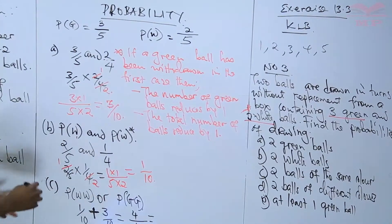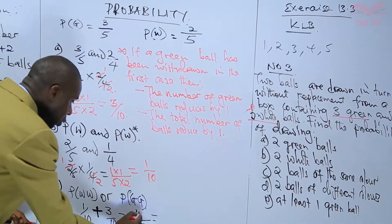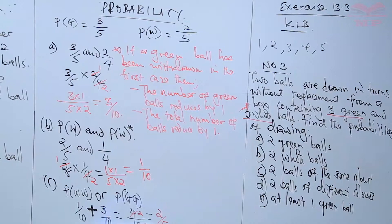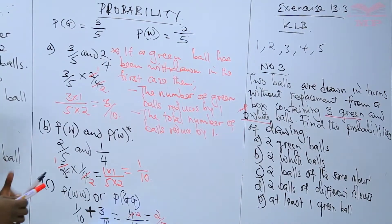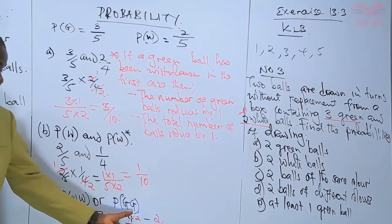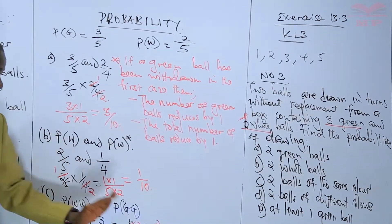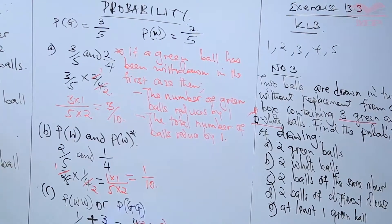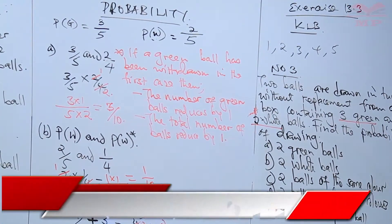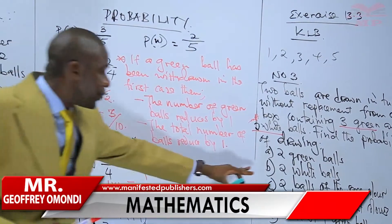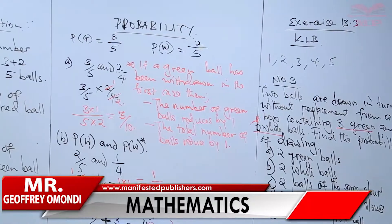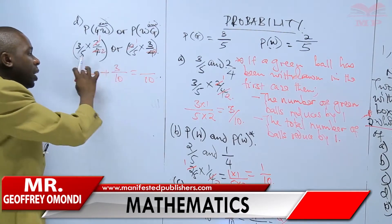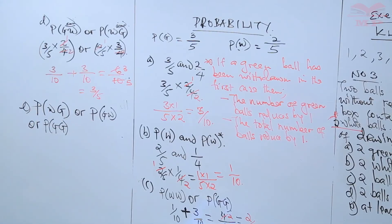We can simplify four over ten: two cancels into both, giving us two over five. It is important to remember that when dealing with probability, anytime your answer is a fraction, make sure it is in its simplest form. We agreed: with a similar denominator, simply add the numerators and write one denominator.